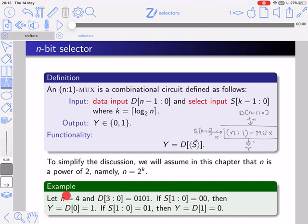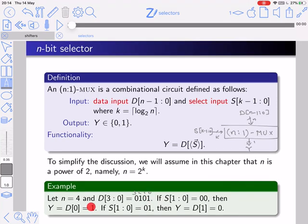Let's see an example. Let's choose N equals 4. And our data input D from 3 to 0 is 0, 1, 0, 1. So I want to emphasize, this is position 0, this is position 1, 2, and 3. Now if S is two 0s, then we are interested in the bit in position 0, and therefore we output 1. If S is 0, 1, then it represents the number 1, so we're interested in this bit in position 1, and therefore the output should be D1, which equals 0.